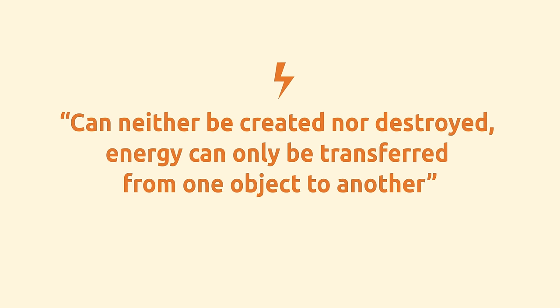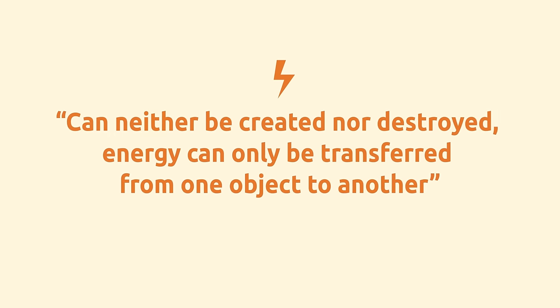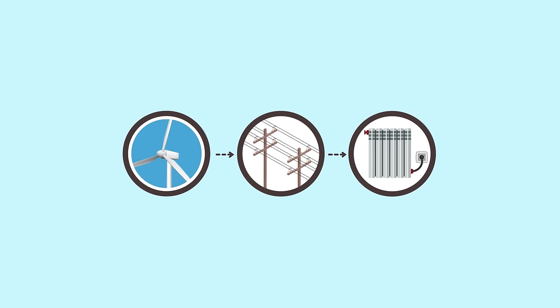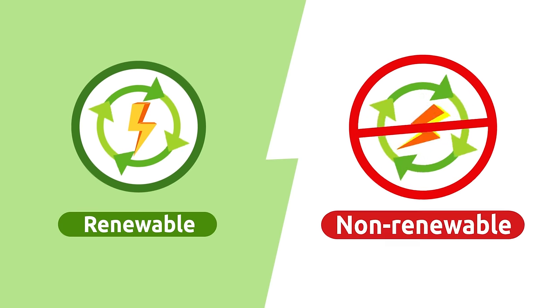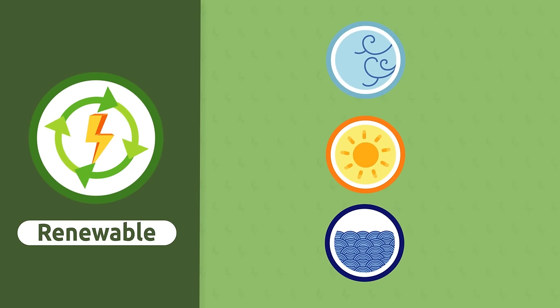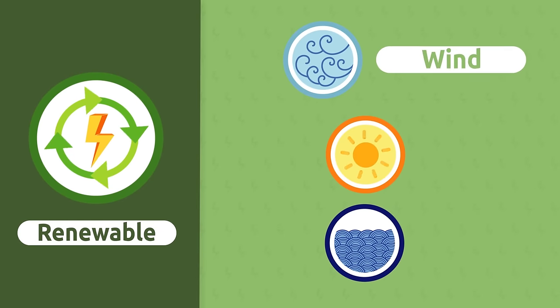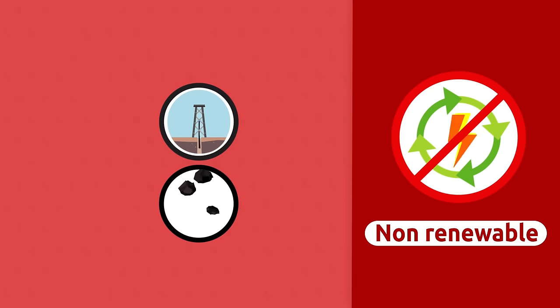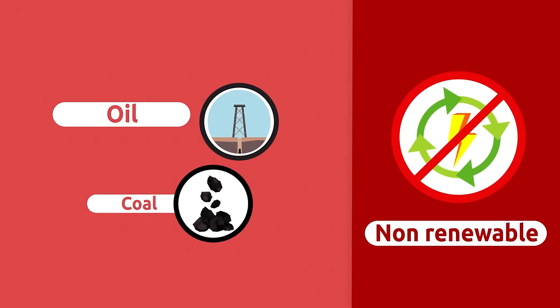We can walk or jump thanks to the energy we get from food. You should know that energy can neither be created nor destroyed — energy can only be transferred from one object to another. For example, energy in the air can be transformed into electricity, and this can be transformed into thermal energy to warm a room by means of a radiator. We obtain energy from two sources: renewable and non-renewable. Renewable energy refers to limitless energy sources like wind, sunlight, or sea waves. Non-renewable energy refers to limited sources like oil or coal.